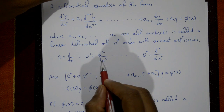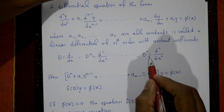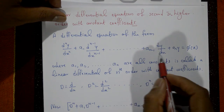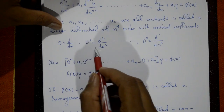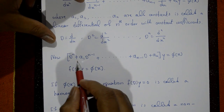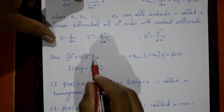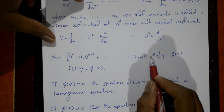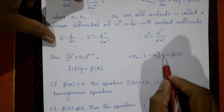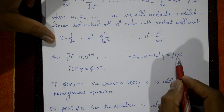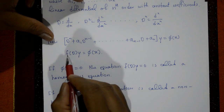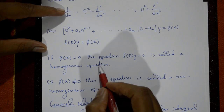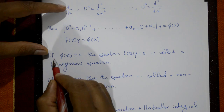Here D stands for d/dx, D² stands for d²/dx², and so on, D^n stands for d^n/dx^n. Using this operator notation, the equation becomes: (D^n plus a1 D^(n-1) plus ... plus a(n-1) D plus a_n) y equals phi of x. This part is written as f(D) times y equals phi of x.